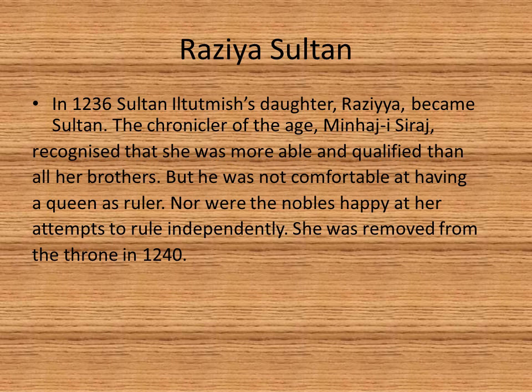Raziya Sultan: In 1236, Iltutmish's daughter Raziya became Sultan. The chronicler Minhaj-i-Siraj recognized that she was more able and qualified than all her brothers, but he was not comfortable having a queen as ruler. Nor were the nobles happy at her attempts to rule independently. She was removed from the throne in 1240.